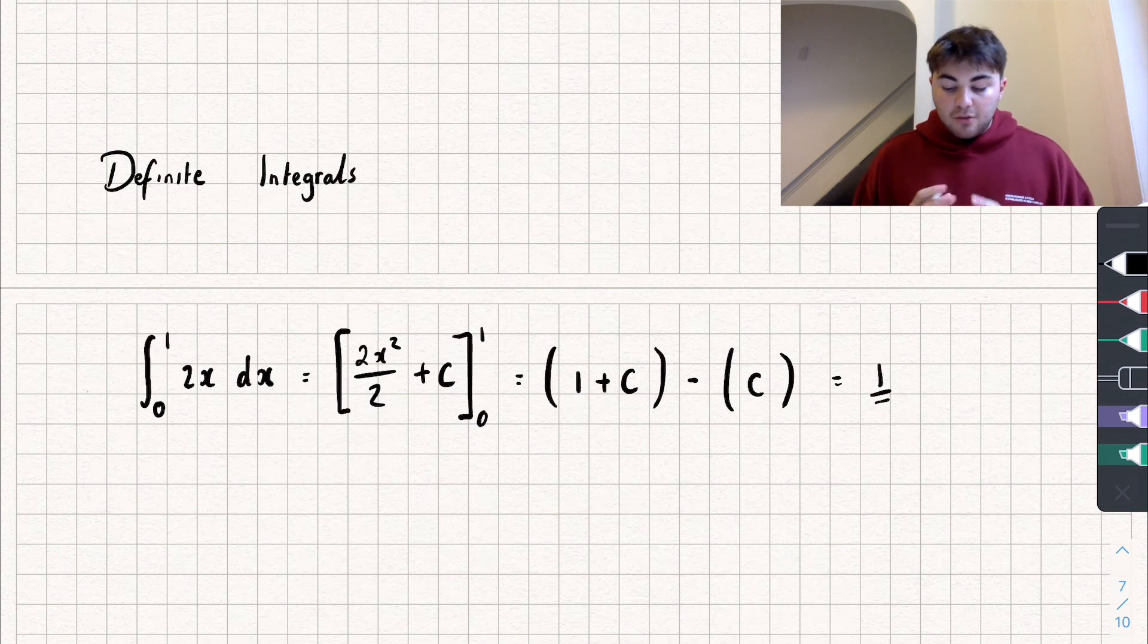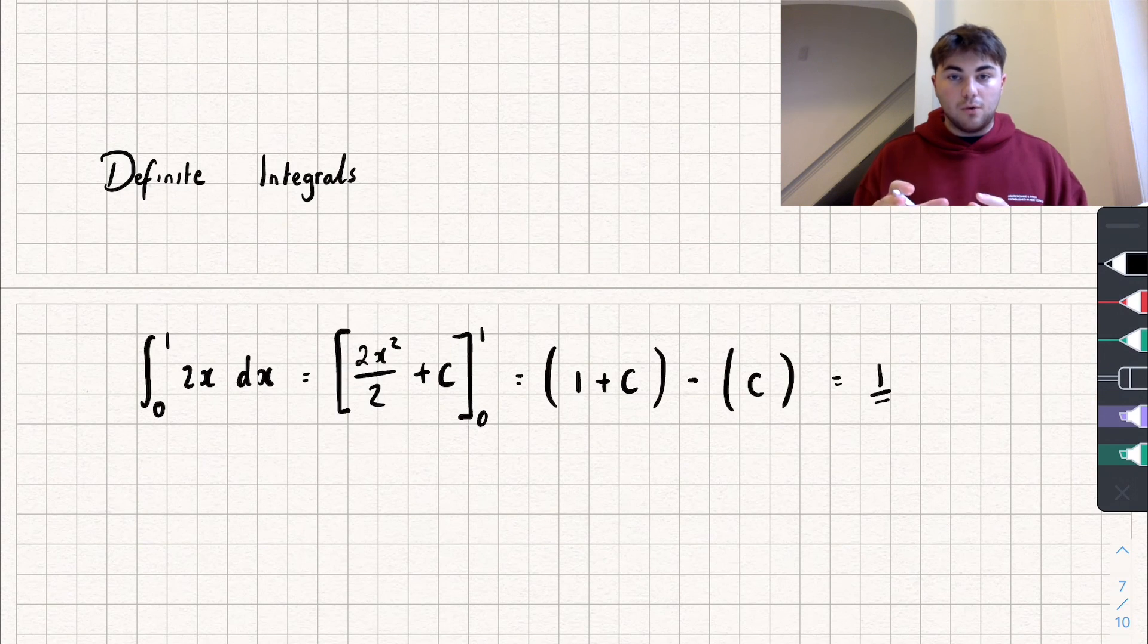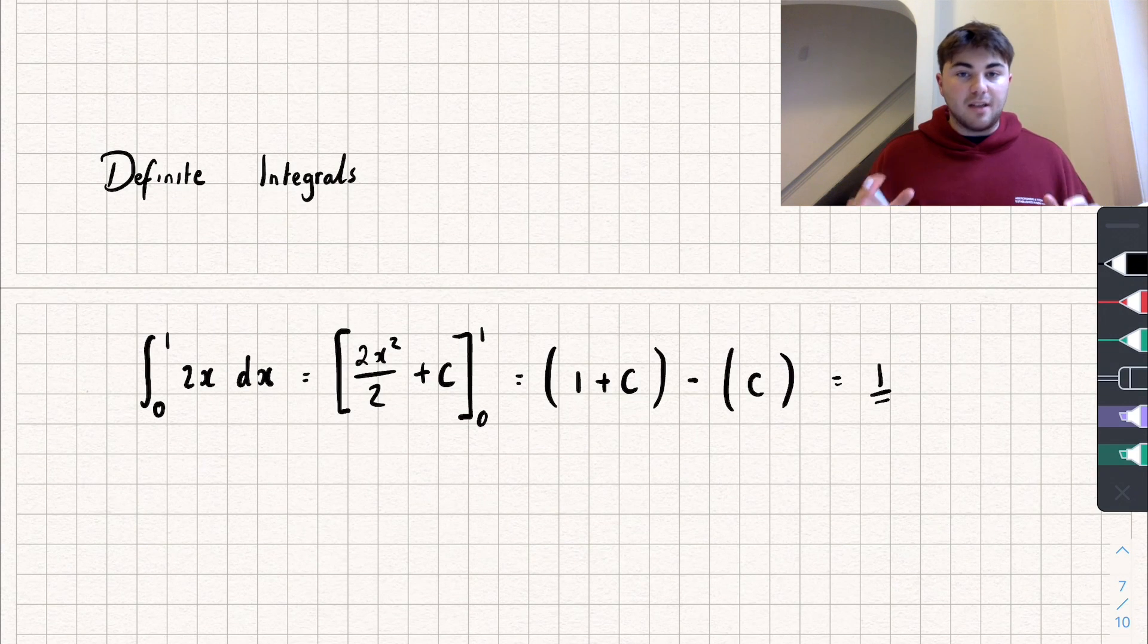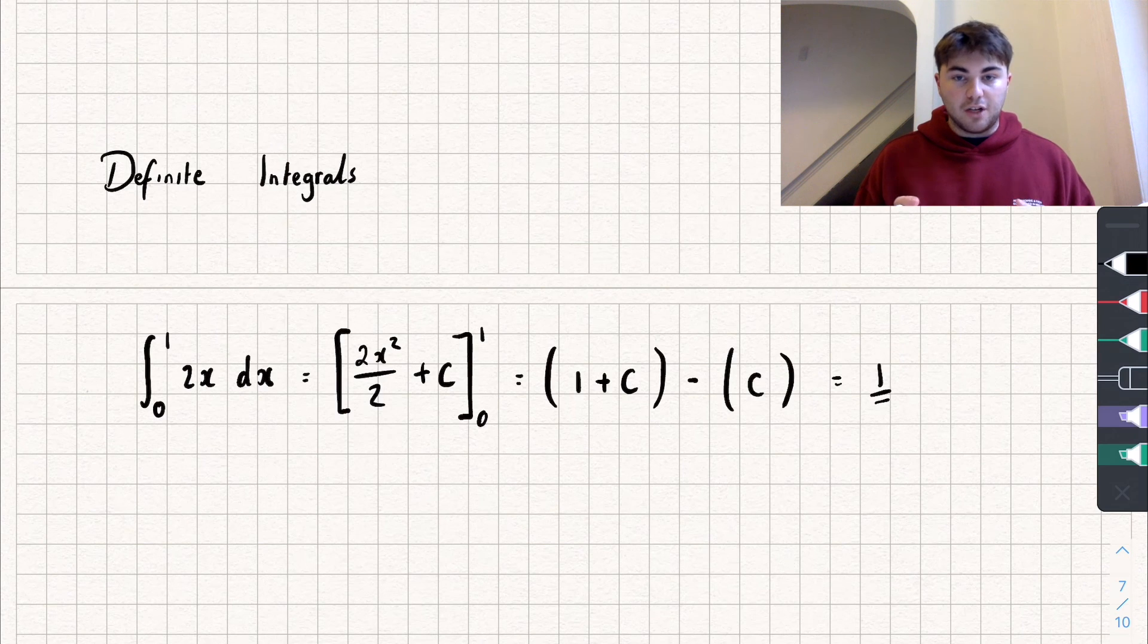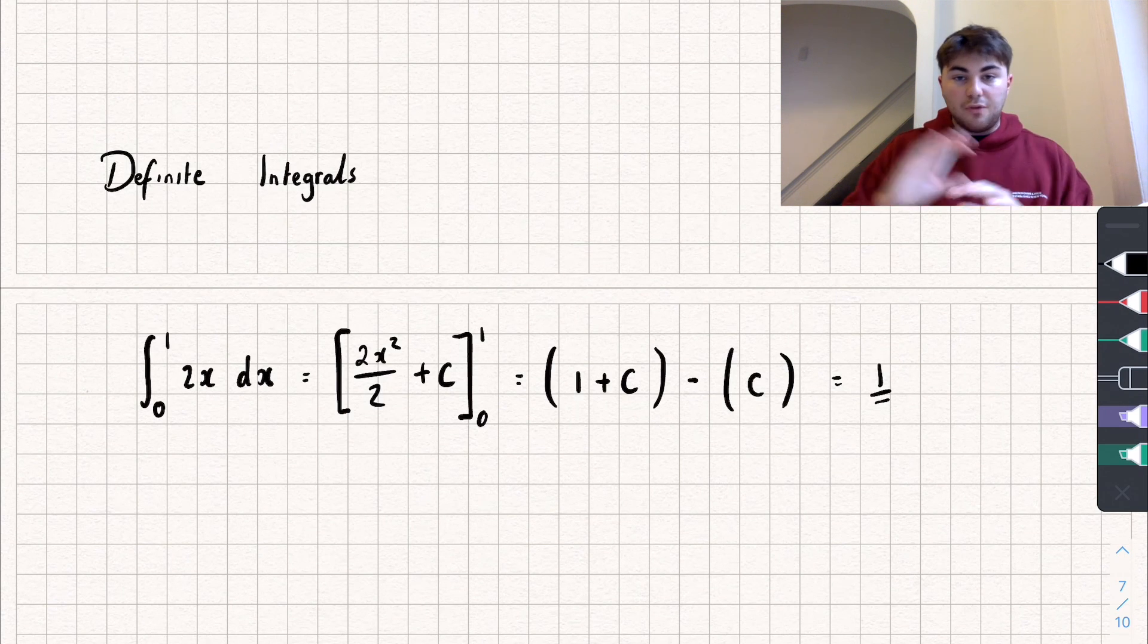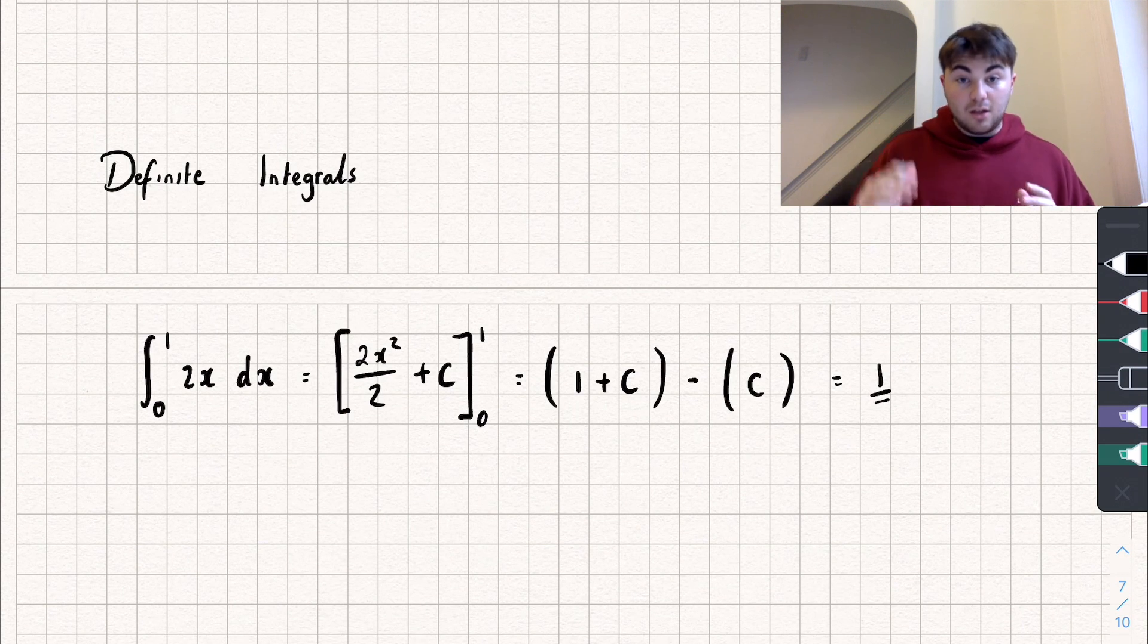And you'll notice that the constant of integration has disappeared when we've calculated the definite integral. And so for this reason when we calculate definite integrals we don't need to bother adding in the constant of integration. We can just integrate, forget about the constant, and then put in our limits.